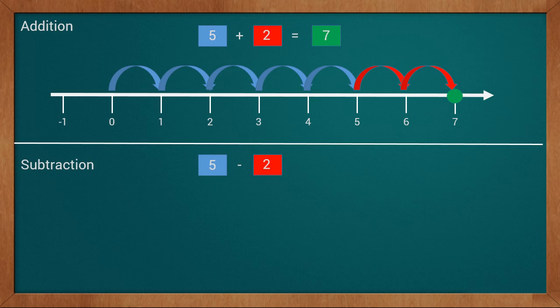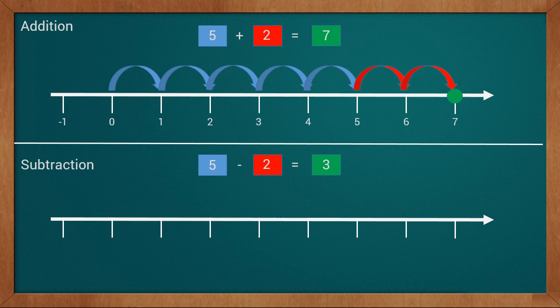Now we will see the subtraction example. 5 minus 2 equals 3. Our problem is 5 minus 2 equals 3. We will draw it on the number line. Our first value is 5, so we will find 5 on the number line: 1, 2, 3, 4, 5. We reached 5 on the number line.